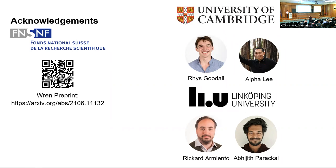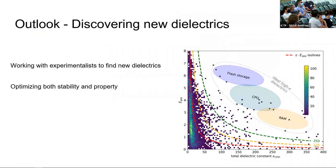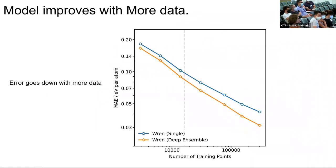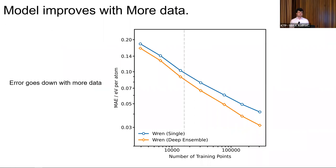A question about the generative step asked how Wyckoff sites with one or two degrees of freedom are handled — for example, atoms that can lie along a line or plane. The speaker explained that in practice there is typically only one minimum along such lines, so the structure relaxes into the correct one. Edge cases with multiple minima exist but are rare and generally occur only for high-energy structures.